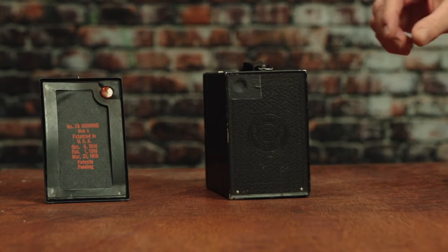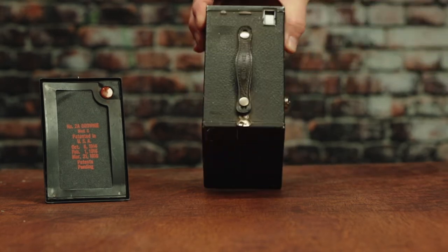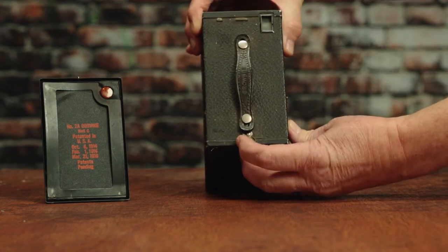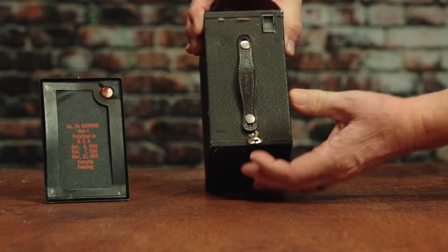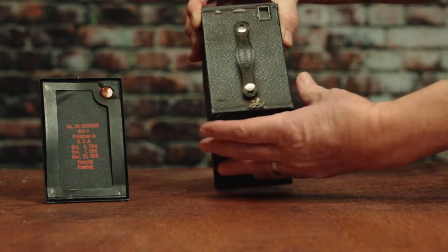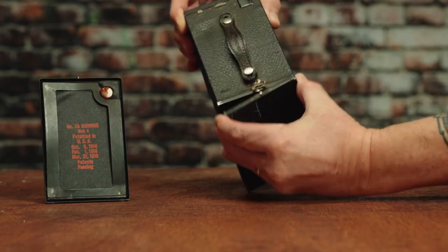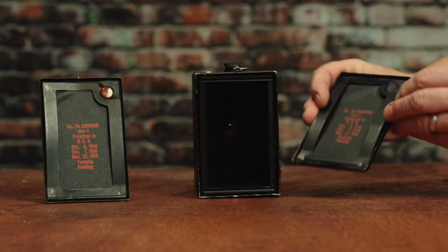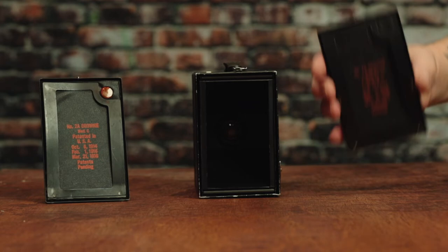So the first thing you've got to do to get into this camera is you'll see this little latch right here. We're going to push that over to the side and it lifts up because it's kind of like a spring. And you'll find that this back of this camera now just pops right off. So this back you see over here is just one of these.